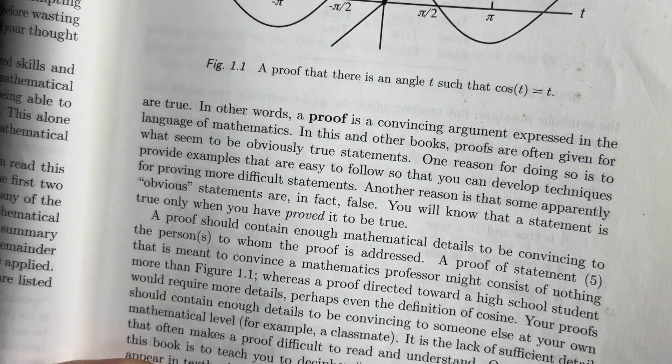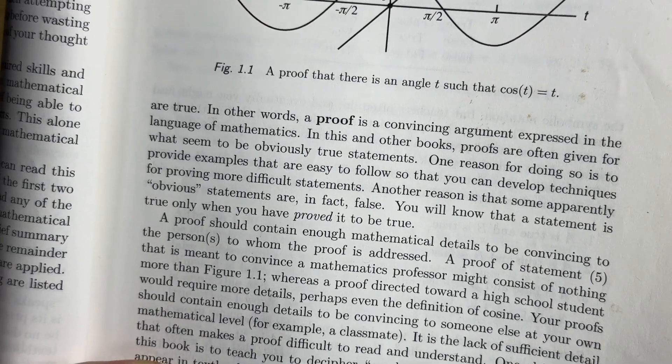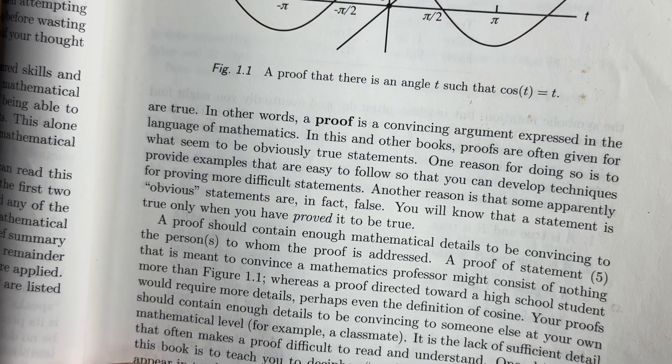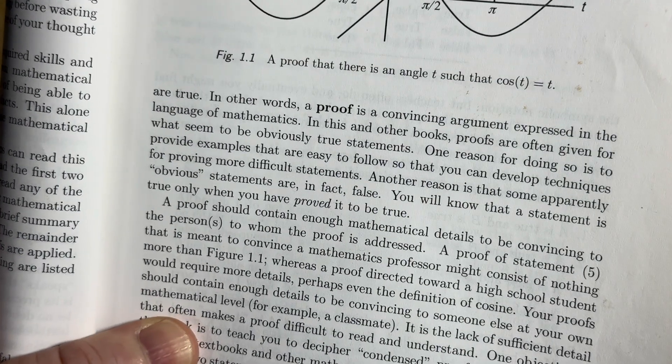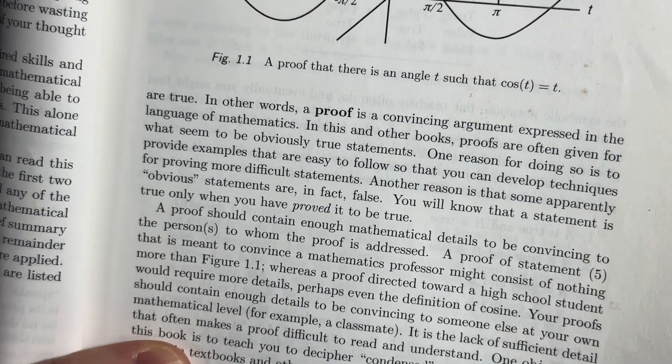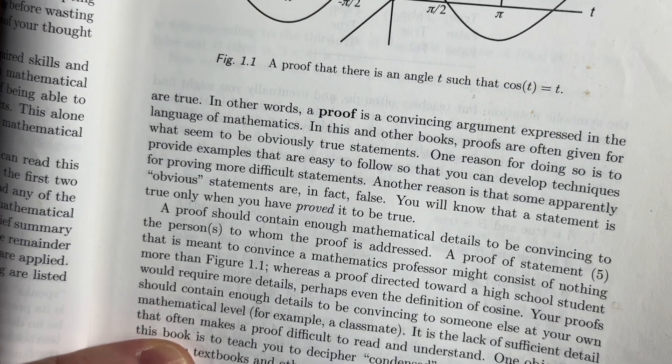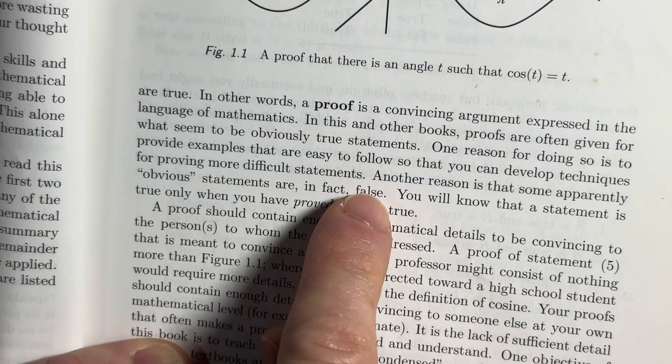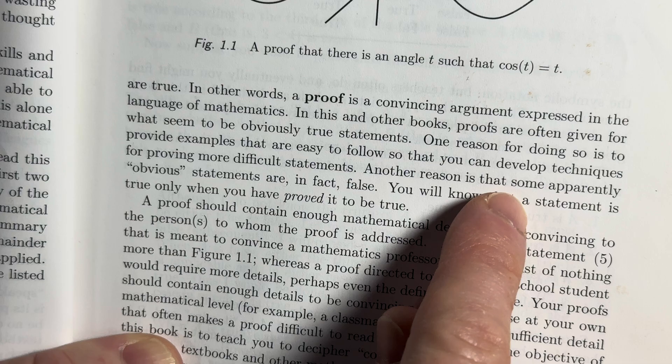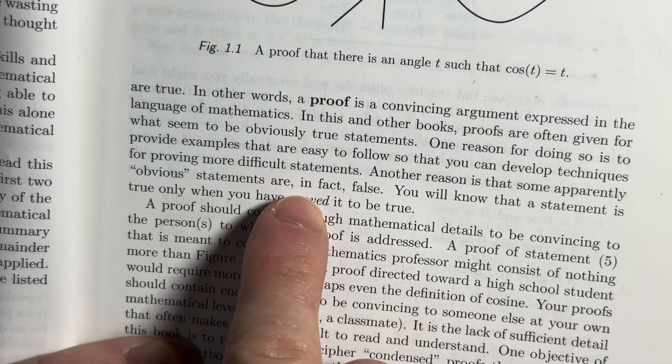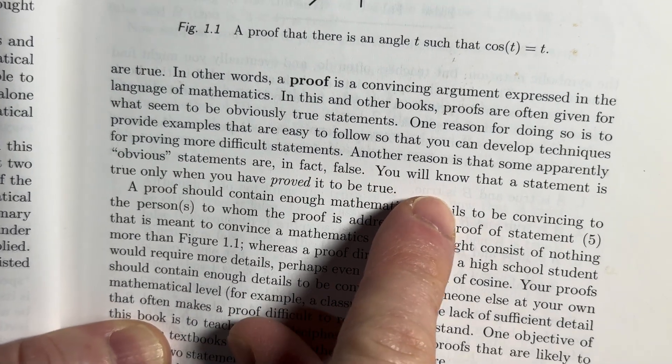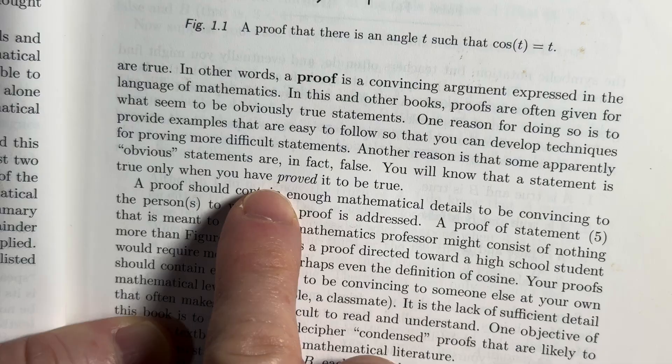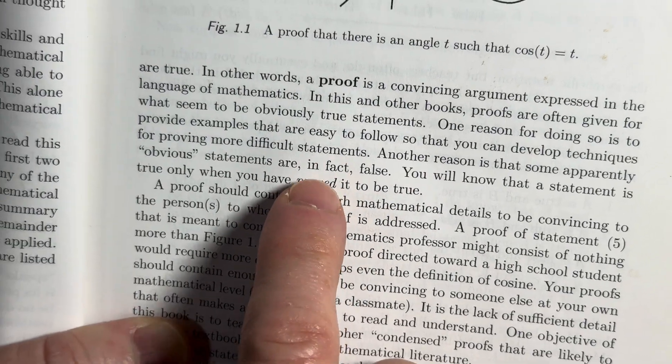In other words, a proof is a convincing argument expressed in the language of mathematics. In this and other books, proofs are given for what seem to be obviously true statements. One reason for doing so is to provide examples that are easy to follow so that you can develop techniques for proving more difficult statements. Another reason is that some apparently obvious statements are in fact false. You will know that a statement is true only when you have proved it to be true. So this is key.